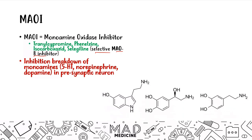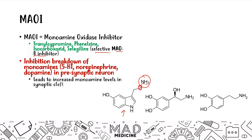Looking at the chemical structures of these neurotransmitters, each has one amine group — it's a primary amine because the nitrogenous group is only bound to one R group and two hydrogens. That's consistent across serotonin, norepinephrine, and dopamine. By inhibiting monoamine oxidase, you get an increased amount of monoamine levels in the synaptic cleft.